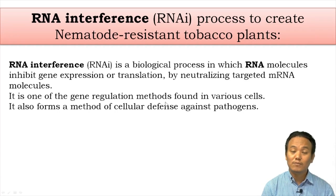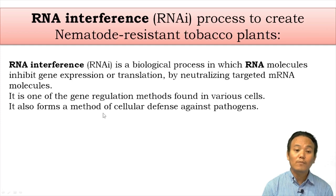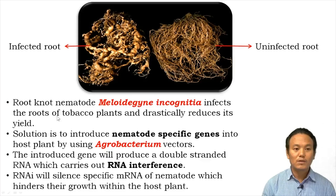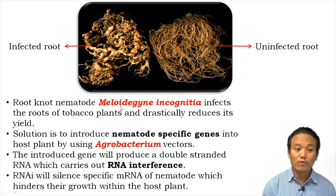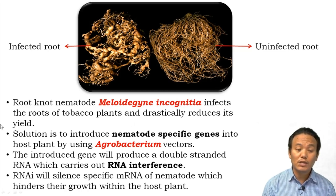RNA interference also forms a method of cellular defense against pathogens among eukaryotic organisms. There is a particular nematode parasite called Meloidogyne incognita which can infect the roots of tobacco plants and drastically reduce their yield. You can see the difference between an infected root and an uninfected root in this picture. This parasite infects the roots of tobacco plants, causing huge financial loss to tobacco farmers.